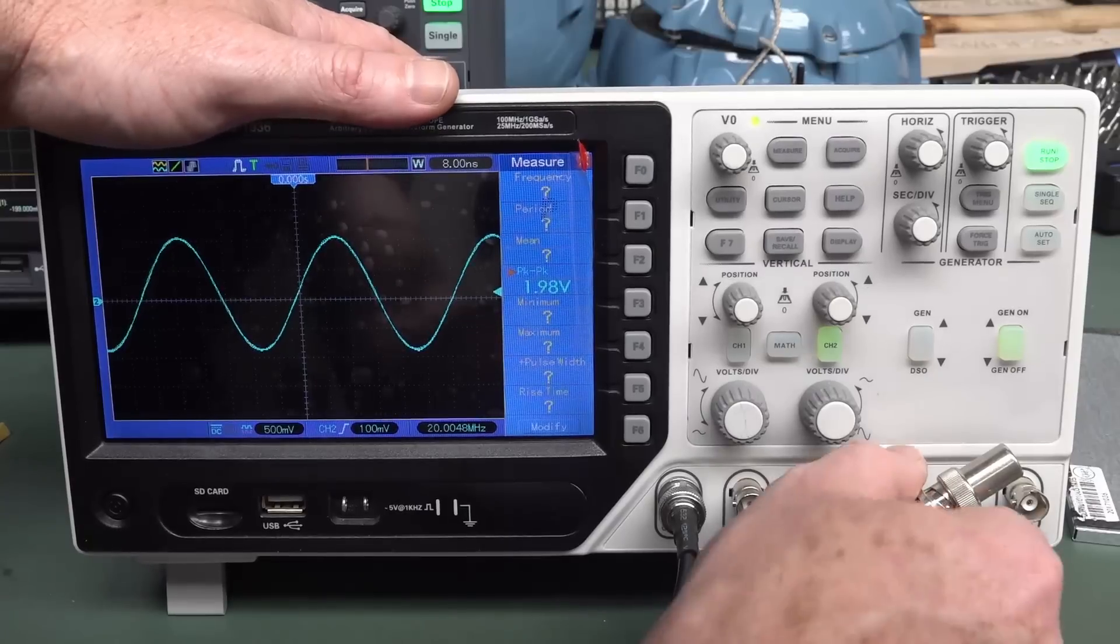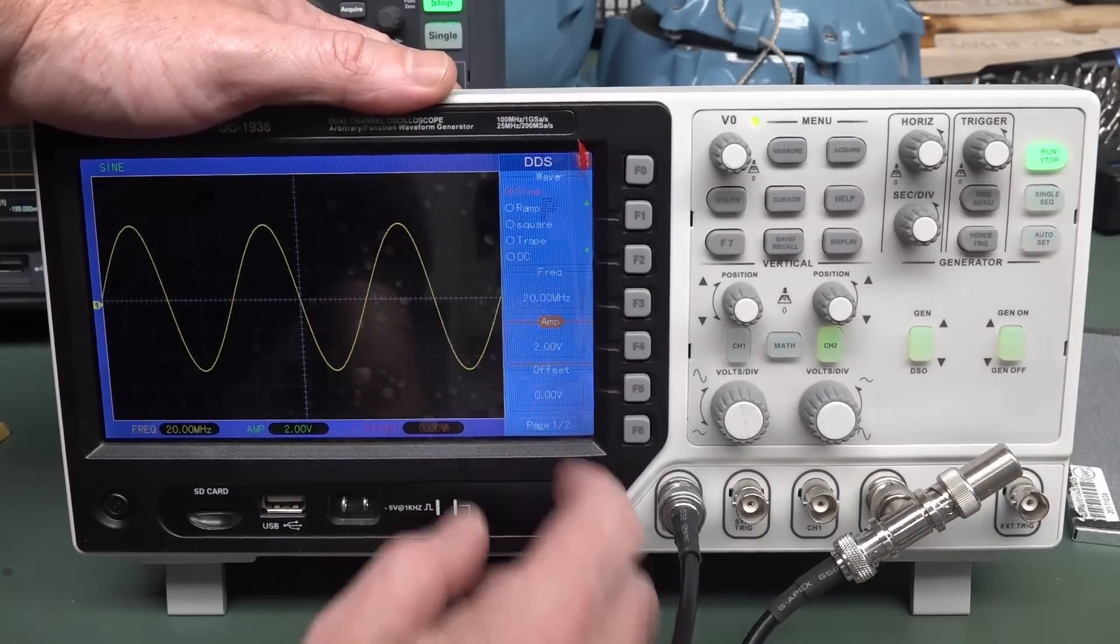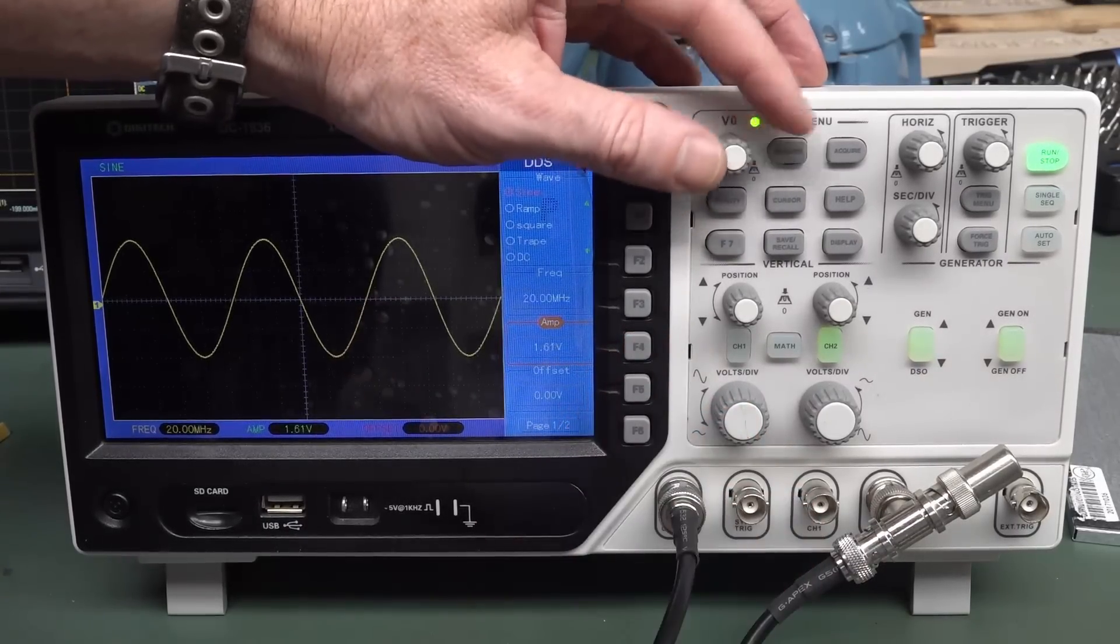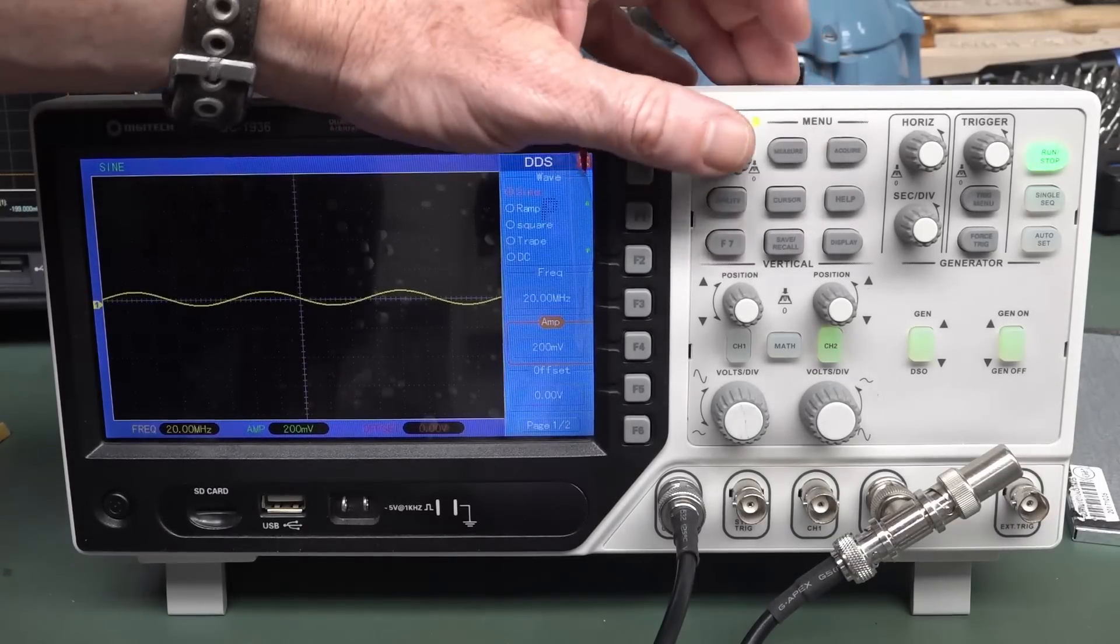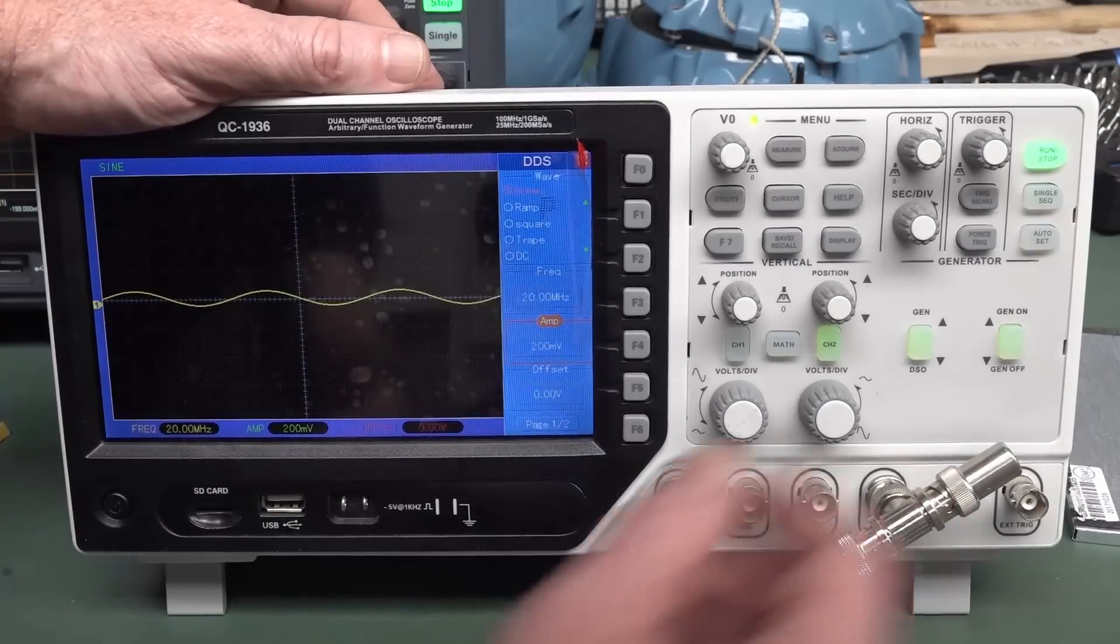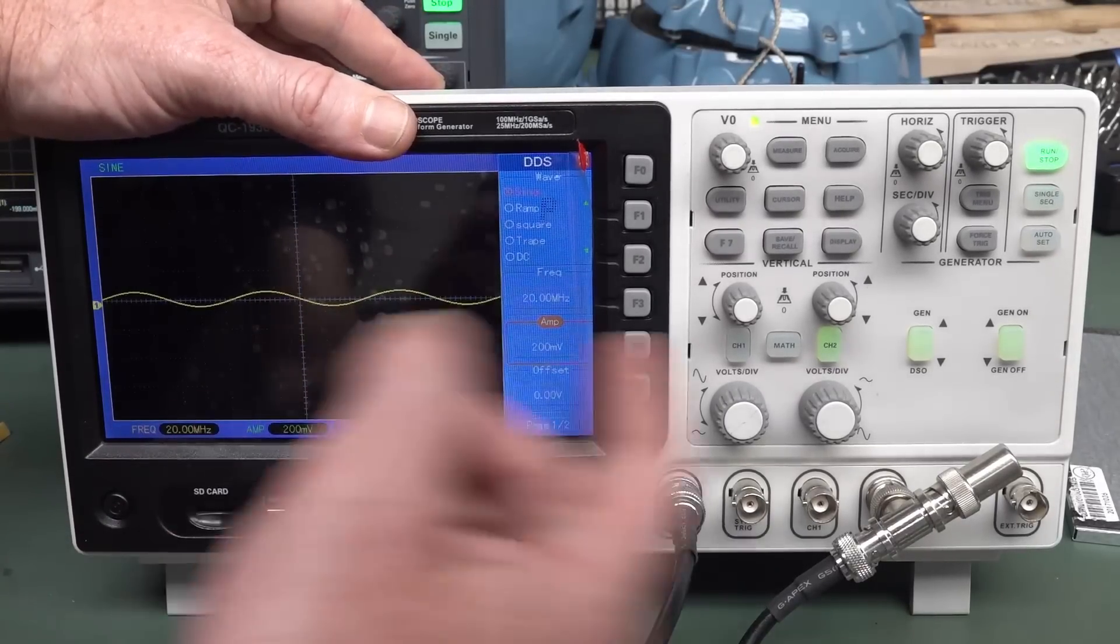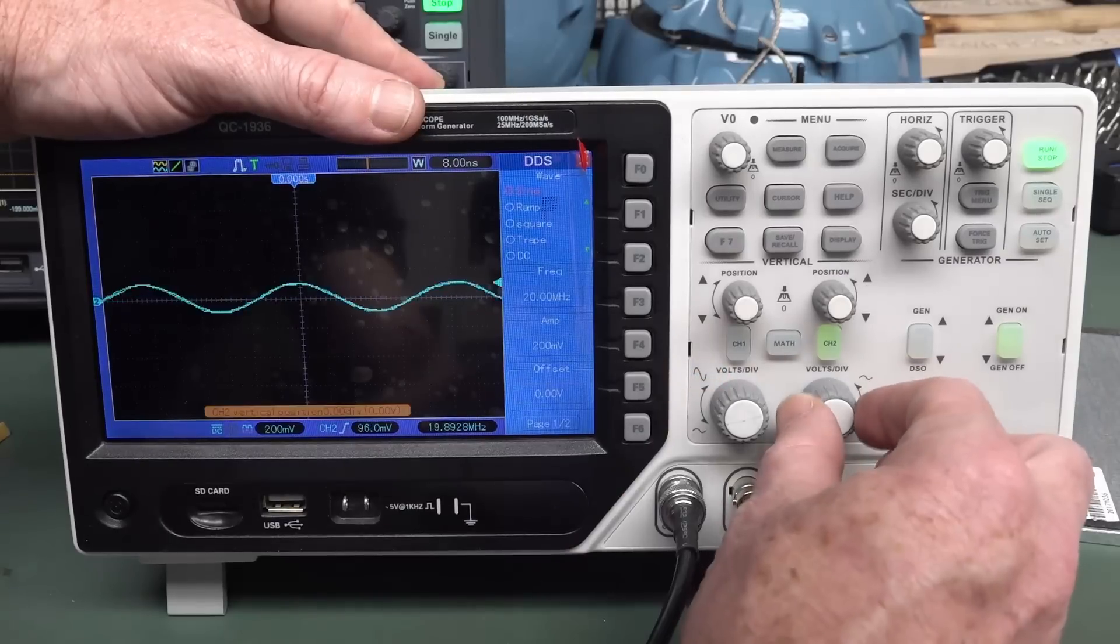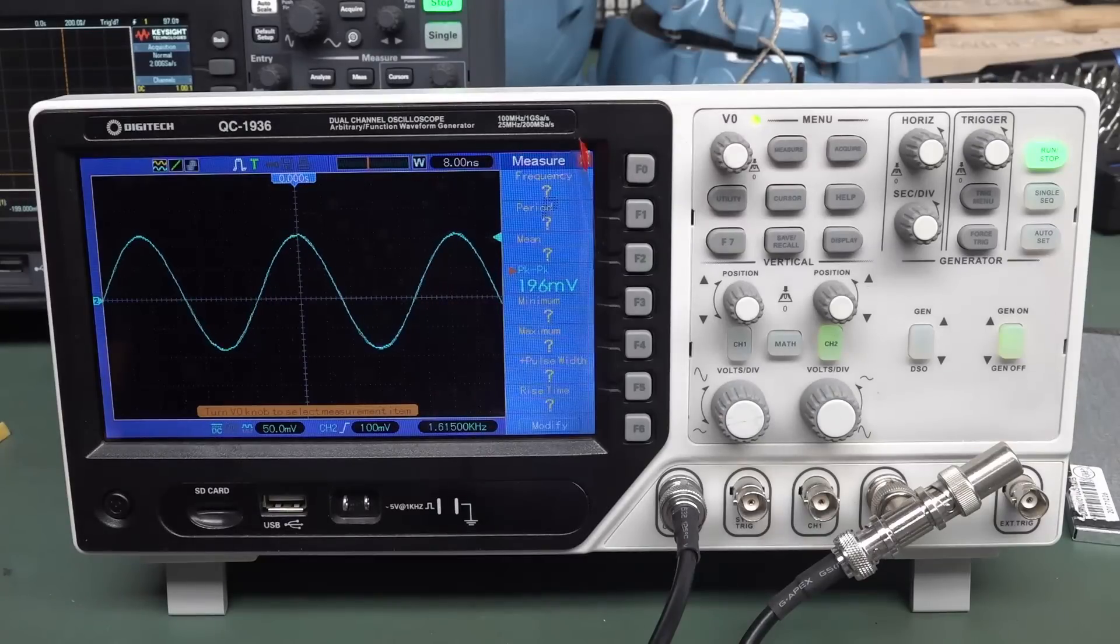So we'll just check, we'll spot check another lower amplitude one. So we'll go down here, and we'll type in, can we type something in? Oh, we can't type that one in. So let's go down to say 200 millivolts, right? No worries. All right. Unsupported operation. Please push gen DSO to quit. Oh God. Look, that's, see this stupid display thing, and it puts, I don't know. This is very confusing. And it looks like the scope display, so you're just utterly confused. Channel two volts, volts, volts per division. There you go. So we got our 196 millivolts. No worries.